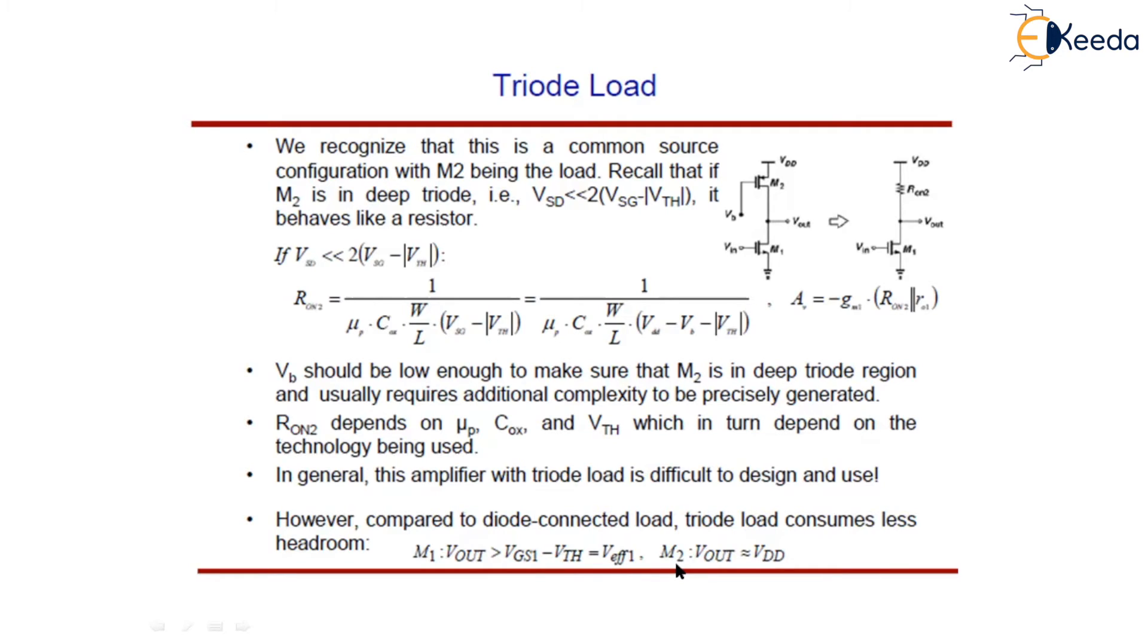And for M2, this M2 is acting like a resistor. And for this, Vout is equal to VD. So this particular amplifier with triode load is very difficult to design and use.